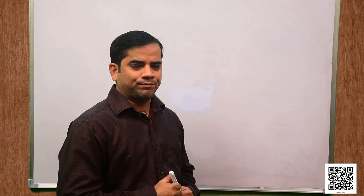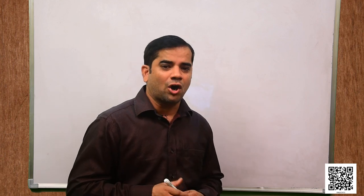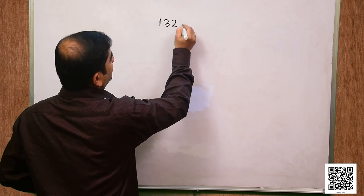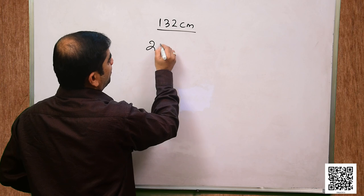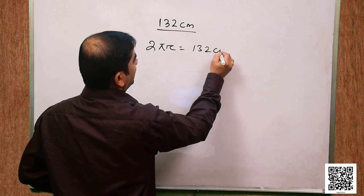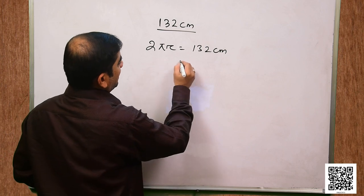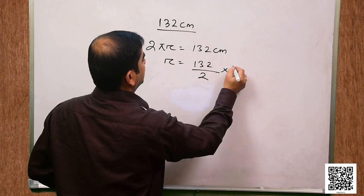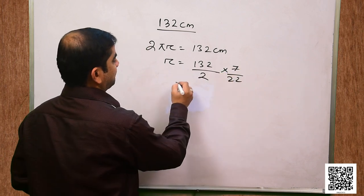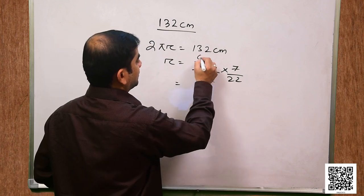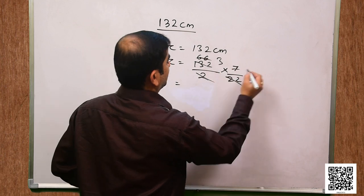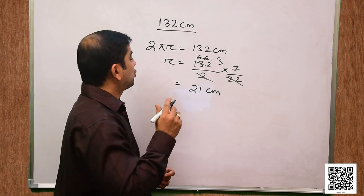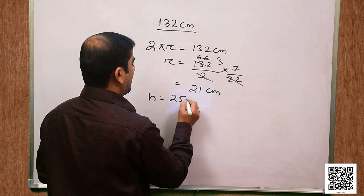Let us solve question 1. As per the given data, the circumference of the base of the cylindrical vessel is 132 centimeter. That means 2πr = 132 centimeter. So r will be 132 divided by 2 into 7/22, which gives r = 21 centimeter. Height h = 25 centimeter.